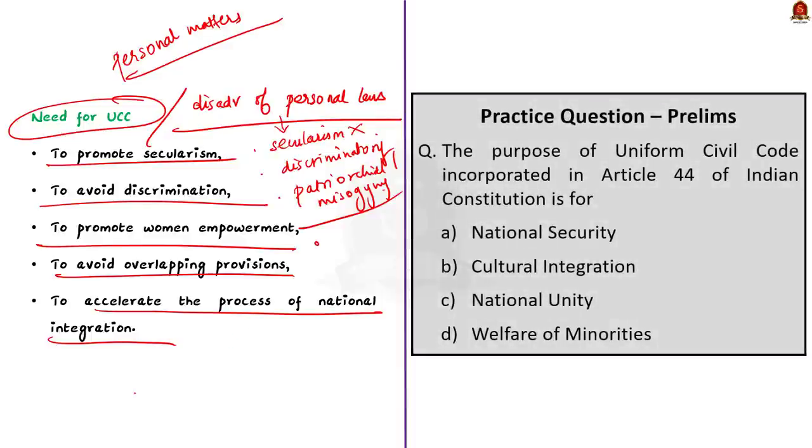There are some challenges in implementing the Uniform Civil Code. Firstly, there are diverse personal laws. Different communities have their own customary practices and this is within the same religion. For example, marriage rules differ between regions in India. Achieving uniformity is difficult due to these diverse practices. Then, there is a lack of uniformity. Not only Hindus, but Muslims and Christians also have different personal laws. The constitution itself protects local customs in certain regions. This lack of uniformity adds to the complexity of implementing a Uniform Civil Code.